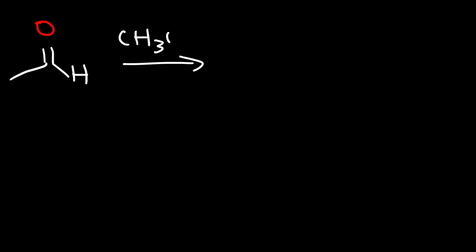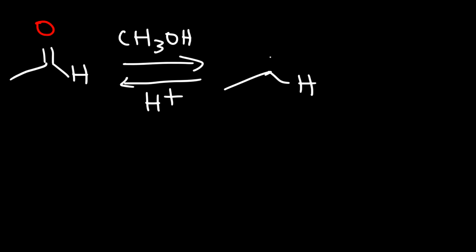If we have an aldehyde and we choose to react it with an alcohol, what type of product will we get? Let's say it's catalyzed by an acid. The product will be a hemiacetal — we're going to get an OR group plus an OH group. That's a hemiacetal.